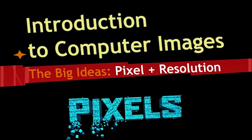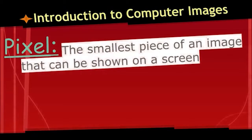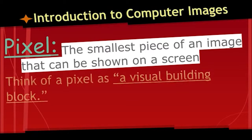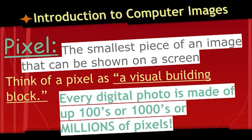Some of you may know this word because it was the title of a movie this year. What is a pixel? A pixel is the smallest piece of an image that can be shown on a screen. Think of a pixel as a visual building block. Every image is built out of hundreds, thousands, or even millions of pixels.